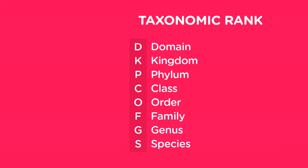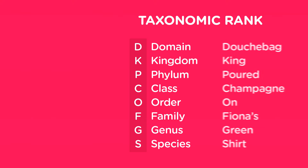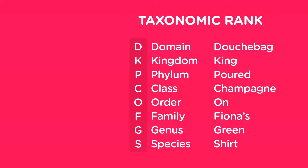you need to memorize: 'Douchebag king poured champagne on Fiona's green shirt.' D for domain, K for kingdom, P for phylum, C for class, O for order, F for family, G for genus, S for species.